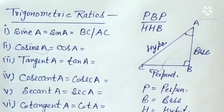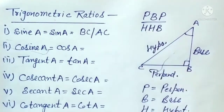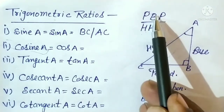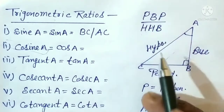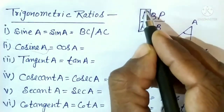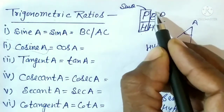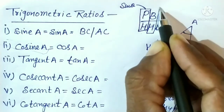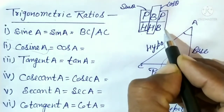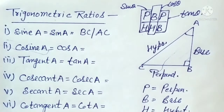Using this trick: the first ratio, P upon H, is for sine. The second ratio, B upon H, is for cosine. The third ratio, P upon B, is for tangent. Remember this trick — once you memorize it, you can recall all trigonometric ratios in seconds and will never forget them.